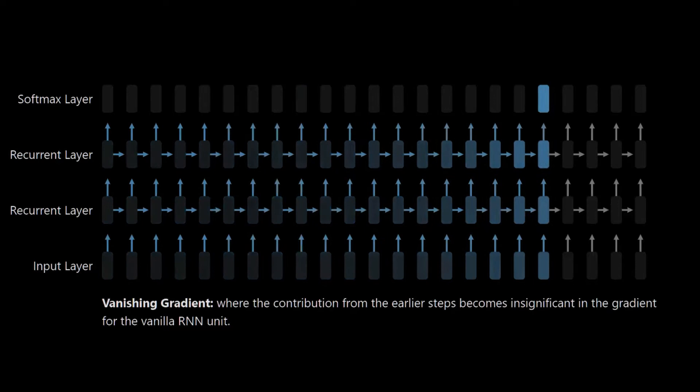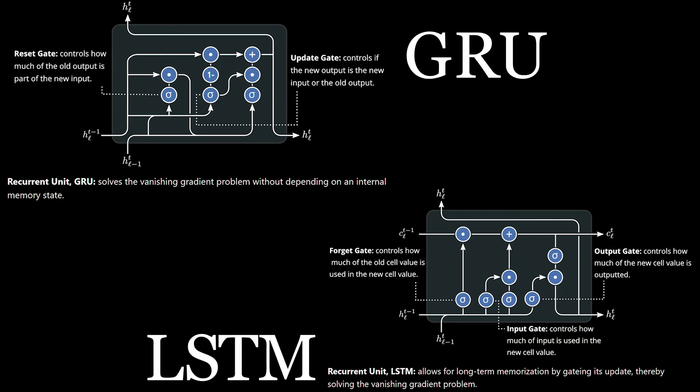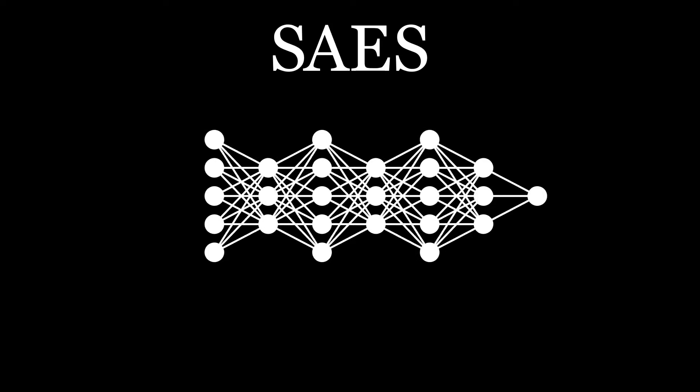GRU and LSTM are both advancements that aim to resolve the vanishing gradient problem of RNN. SAIS, on the other hand, is acyclic. Through a series of encoding and decoding layers, the machine is able to understand traffic flow patterns differently. Lastly, the time-based model takes an absolute time as an input instead of a time series.